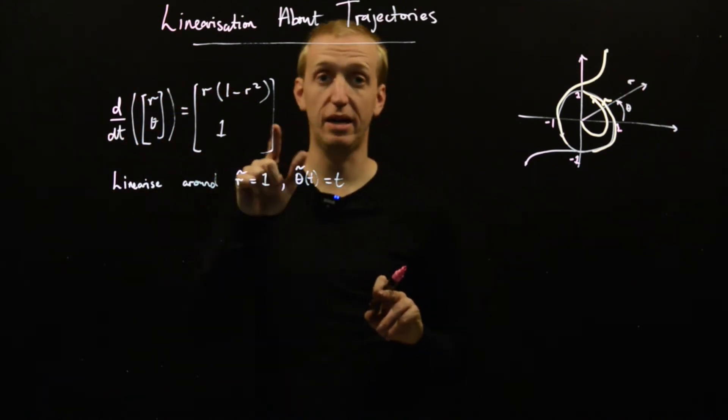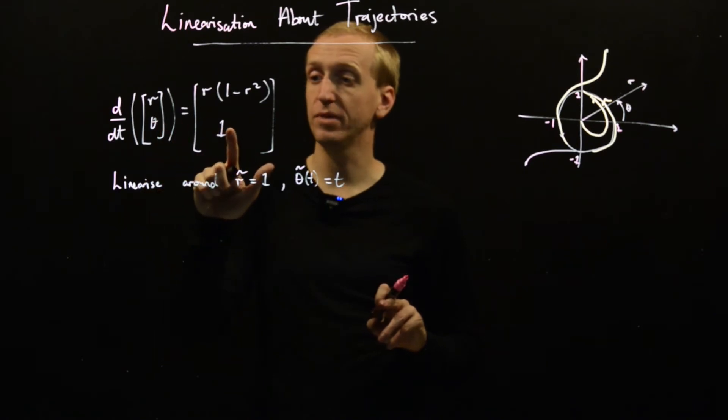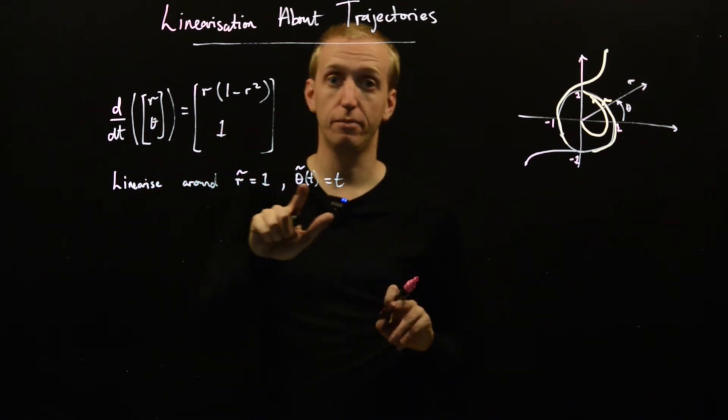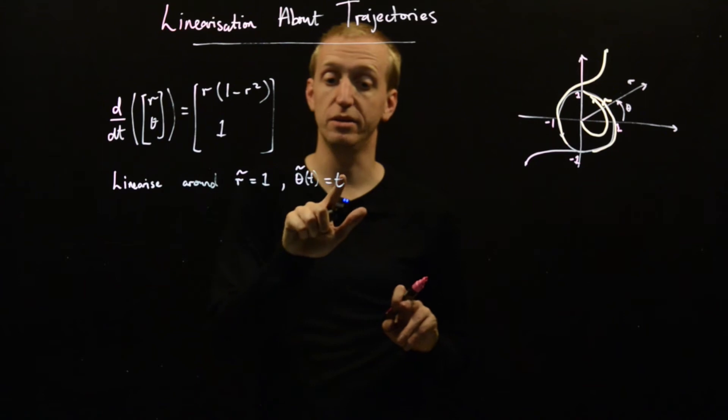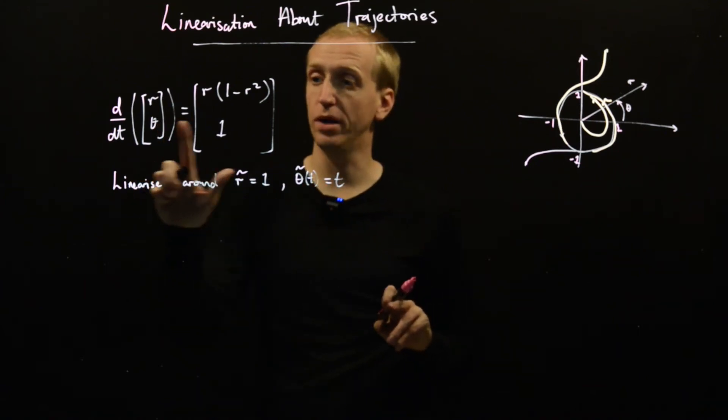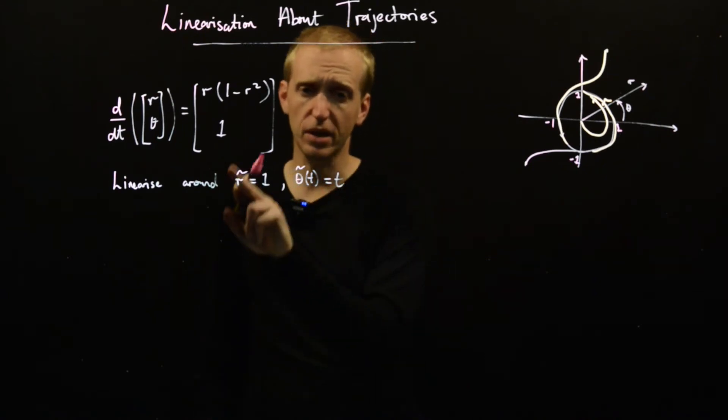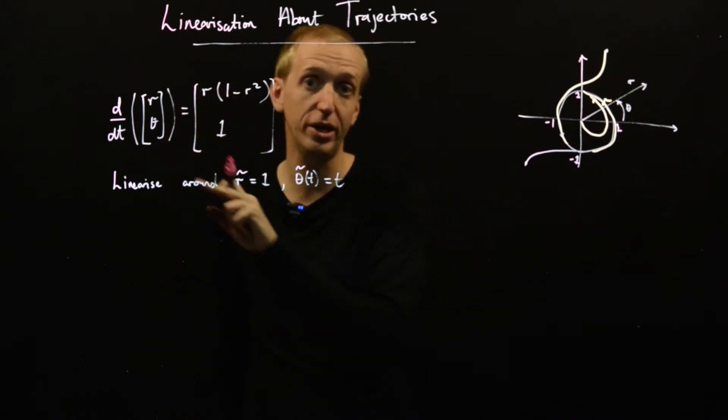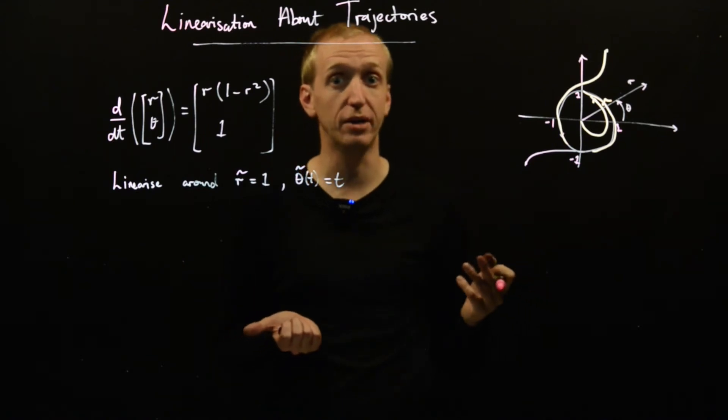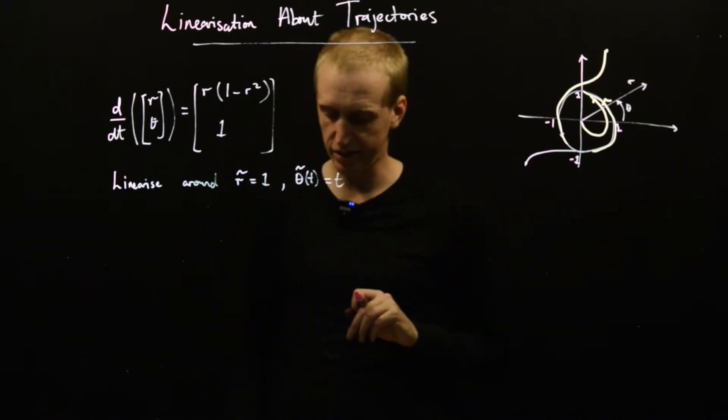The same thing happens for the second one. Theta dot equals 1. If we look at the trajectory theta equals t, well theta dot is then just equal to 1, and we have 1 equals 1. So this is a solution to our differential equation. We can linearize around it using the techniques we looked at last time.